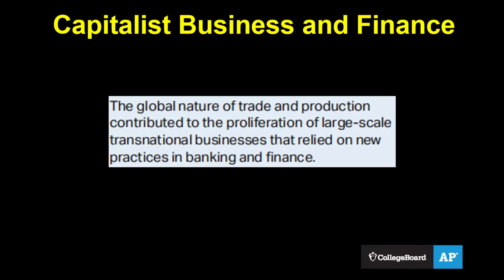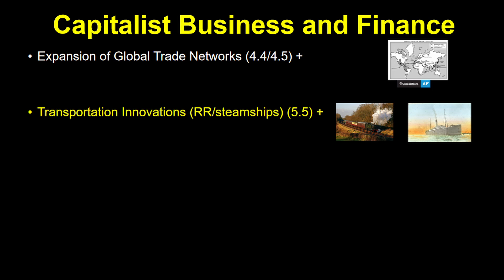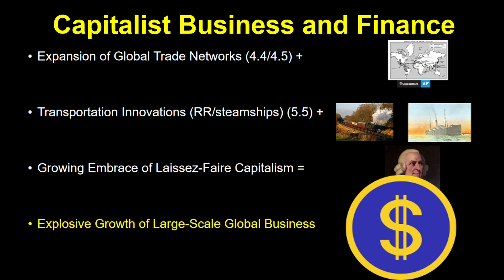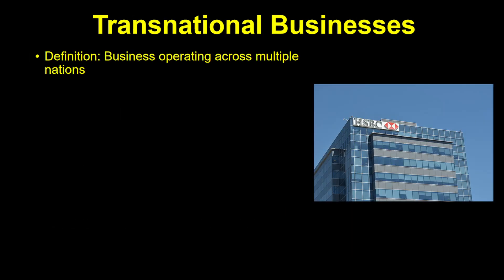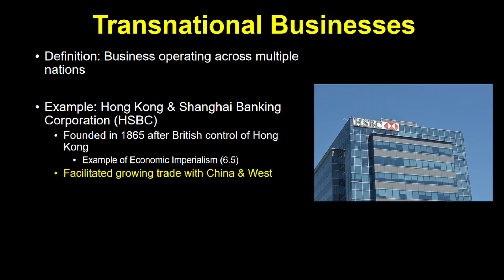The global nature of trade and production contributed to the proliferation of large-scale transnational businesses that relied on new practices in banking and finance. In topics 4.4 and 4.5, we saw the development of the first global trade networks, and in 5.5, we saw how transportation innovations like railroads and steamships made trade faster. These factors combined with governments' embrace of laissez-faire capitalism led to an explosive growth of big business on a global scale. One example is the Hong Kong and Shanghai Banking Corporation, founded in 1865 shortly after the British gained control of Hong Kong. HSBC was a transnational bank set up to facilitate the growing trade with China.